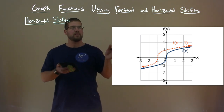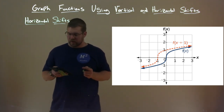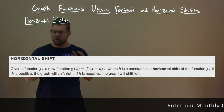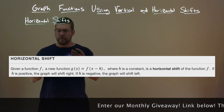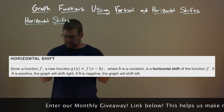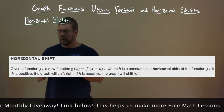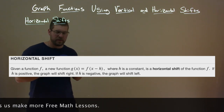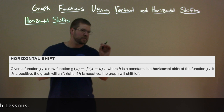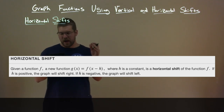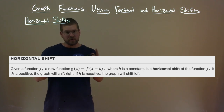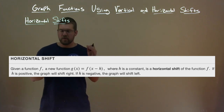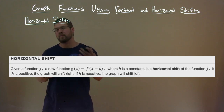So notice that's going to be a horizontal shift. The whole graph is just slid to the left one unit. The definition: given a function f, a new function g of x equals f of x minus h, where h is a constant, is a horizontal shift of the function f. If h is positive, the graph will shift to the right, and if h is negative, the graph will shift to the left. Notice the standard form has x minus h, so subtracting a positive number shifts right; subtracting a negative makes it plus a positive, shifting left. Be careful — make sure you have your plus and minuses down.